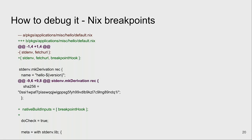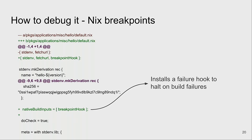Therefore, what I built is something called a breakpoint hook. You add it to your build inputs or native build inputs like a normal package. What it does is register a failure hook in the builder, and when the build crashes, instead of Nix stopping the build and removing all build outputs, it just halts and stays in the environment sleeping forever. It also prints out a command you can use to attach to the sandbox.